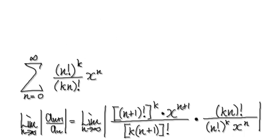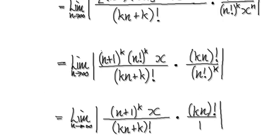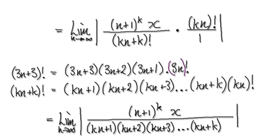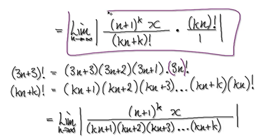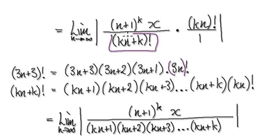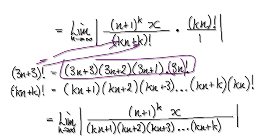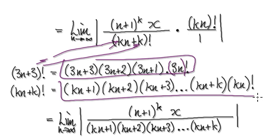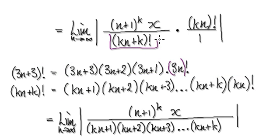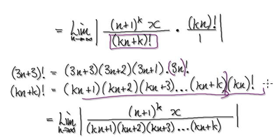Following on from the previous video, we got to this stage here, and then we needed to understand what it really meant. So we put something simple in there — put a number 3 in there — and it gave us this. Then for the general case of k, it gave us this whole thing here, which you can imagine as being kn plus 1, kn plus 2, and so on, all the way to this bit here.